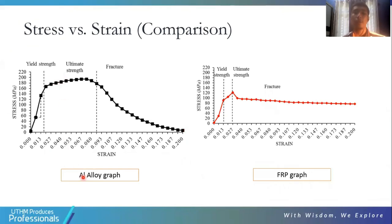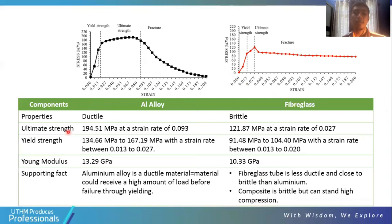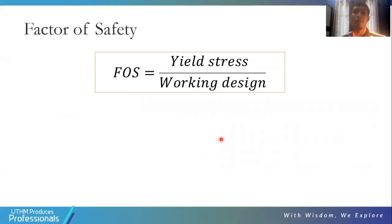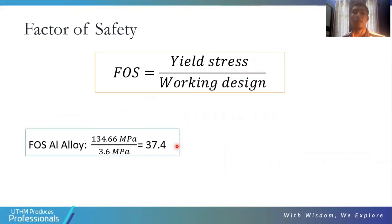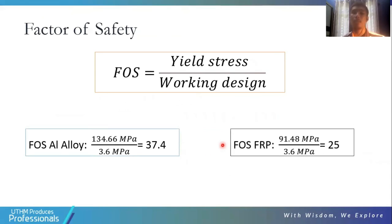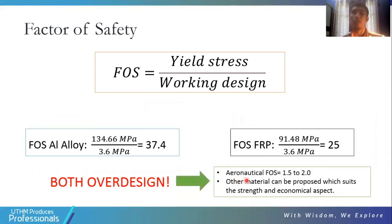The stress versus strength graph comparing aluminium alloy and FRP shows that the ultimate strength for aluminium alloy is 194.5 MPa and for fiberglass is 125.87 MPa. Young's modulus is 30.9 GPa for aluminium alloy and 10.23 GPa for fiberglass. For the factor of safety under sample pressure, aluminium alloy FOS is 37.4 and FRP FOS is 25. Both exceed the JARUS minimum requirement of 1.5, though the structure appears over-designed, as the analytical FOS should ideally be between 1.5 and 2.0.